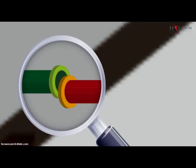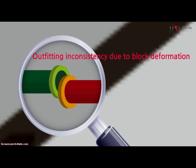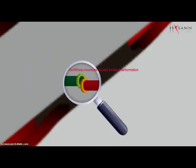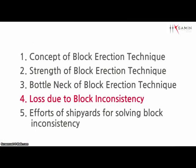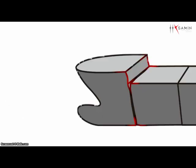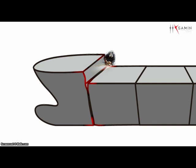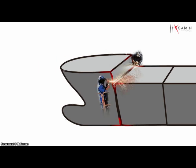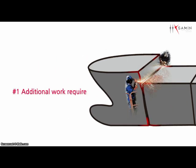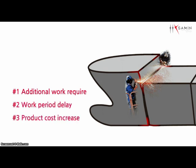The outfitting inside blocks can also be mismatched with one another. This kind of errors between blocks causes the following losses: in order to correct deformed blocks, additional work is required, including extra labor costs and extended construction periods, thereby increasing total production expenses.